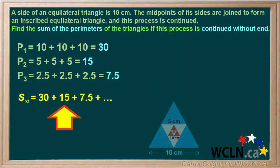If this process continues without end, the sum of the perimeters of the triangles can be found by calculating the sum of the infinite series, 30 plus 15 plus 7.5, and so on.